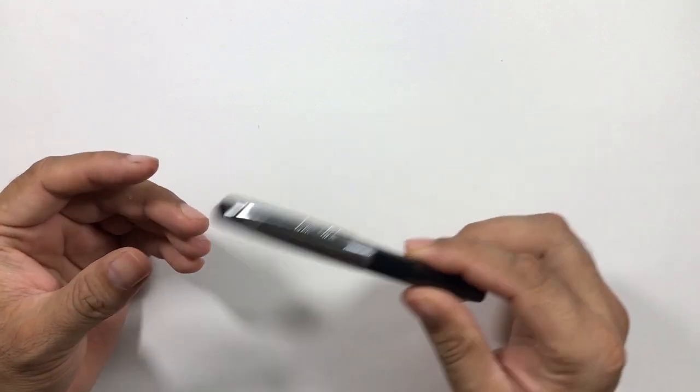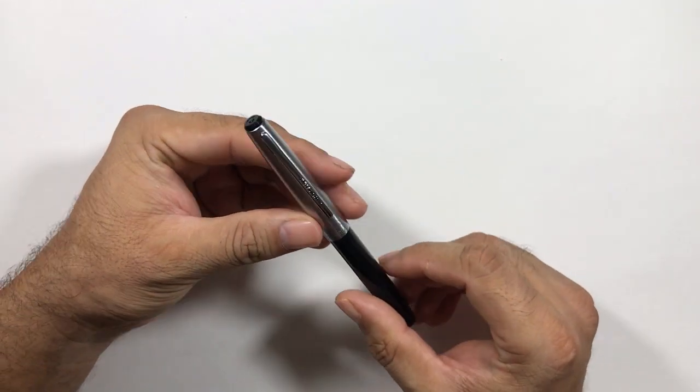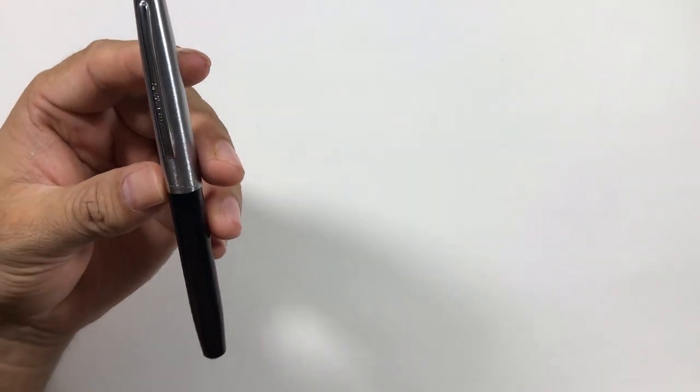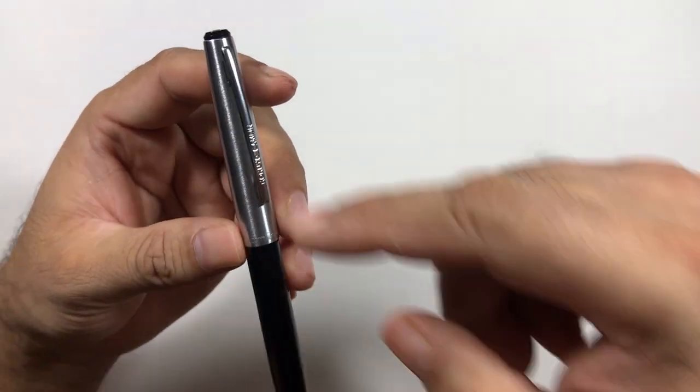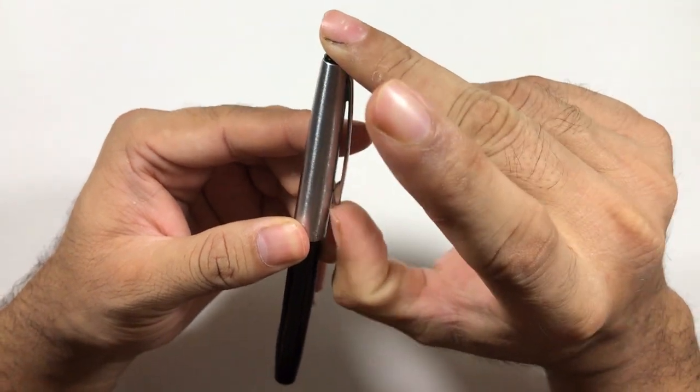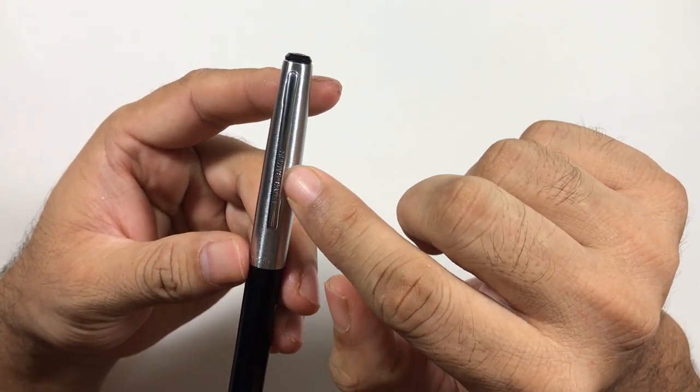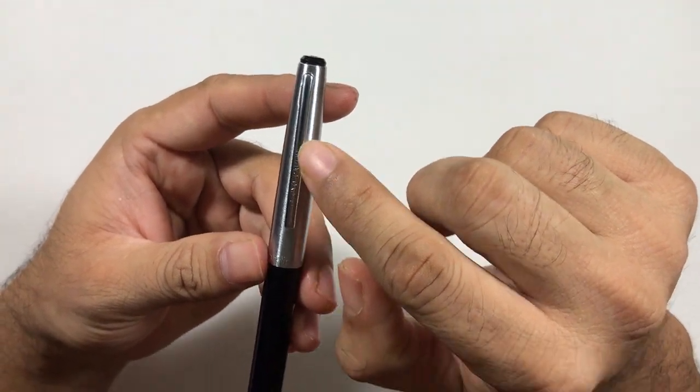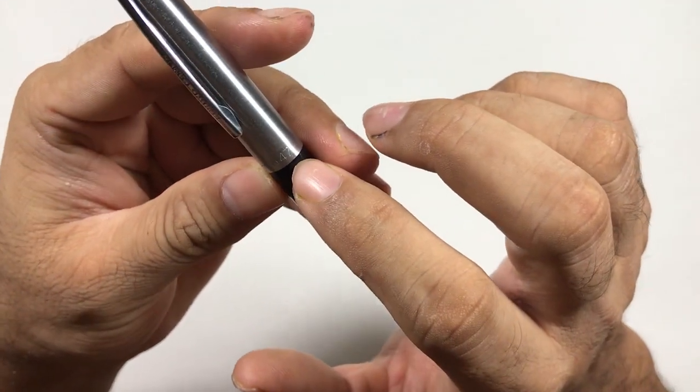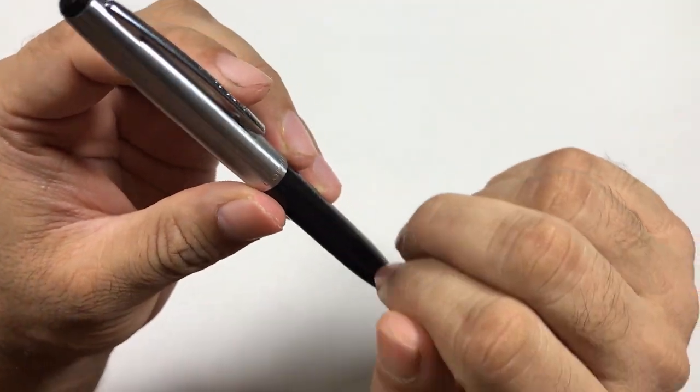I will cover the parts of the pen and then what I like and what I dislike. Starting with the cap, the cap is aluminum and the clip is also aluminum. I think the clip is a little tight. They have their signature Kokuyo Kemlin on the clip and Kemlin 47 engraved on the neck of the cap.